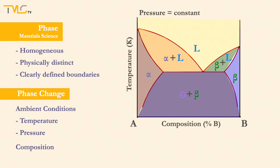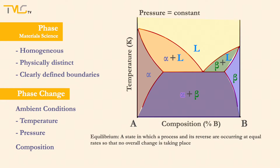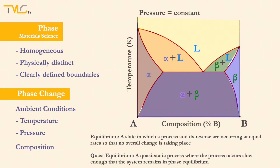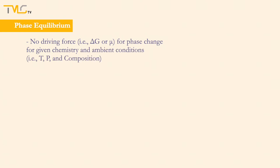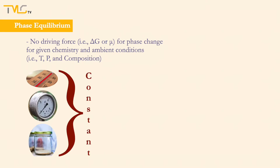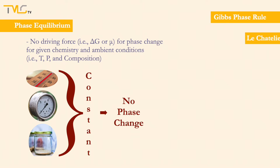In this subseries, equilibrium phase diagrams will be covered, where the system is either in equilibrium or in quasi-equilibrium. Let's take a step back and understand what phase equilibrium means. Phase equilibrium is the state where there is no driving force for phase transformation for the given substance under the given conditions. Such a system will stay in its current phase if the ambient conditions remain the same.